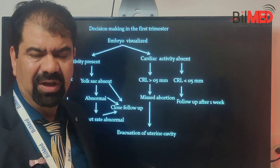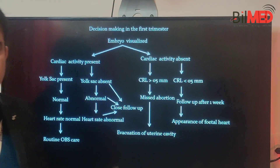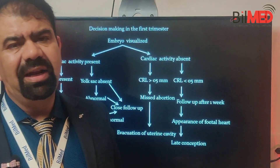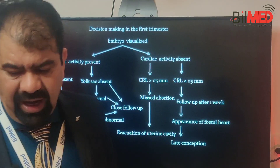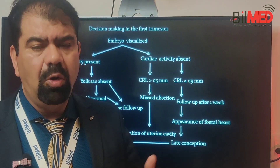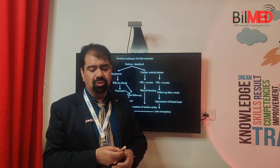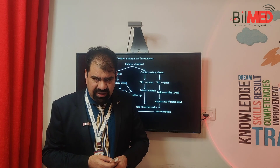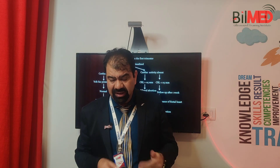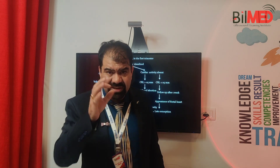If CRL is less than 5 mm, you can follow the case. A follow-up is required — maybe cardiac activity will appear later, because you may be dealing with a late conception. If cardiac activity is found after one week, you can label that case as normal and it will be for routine follow-up.